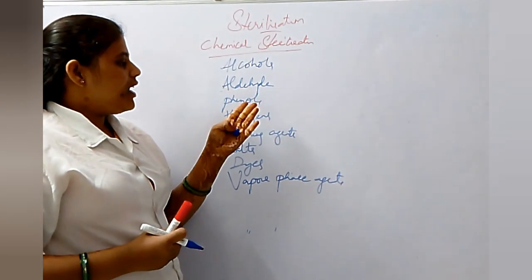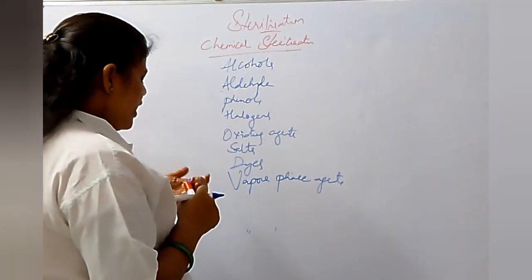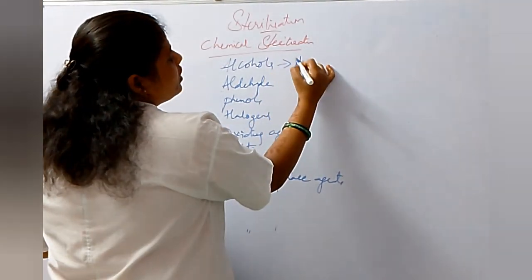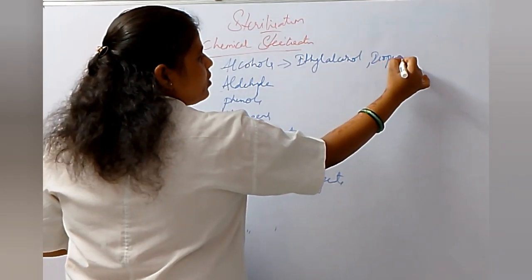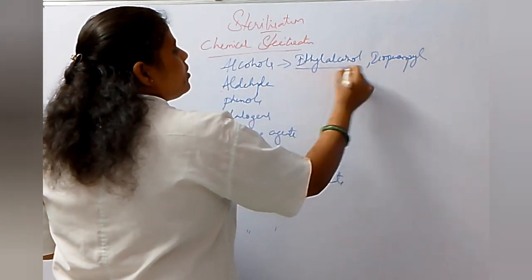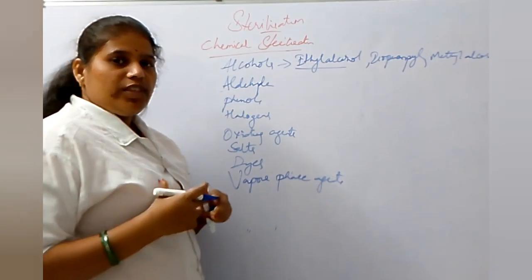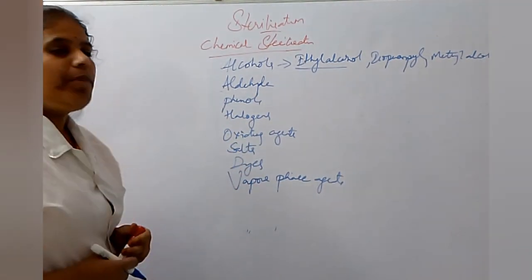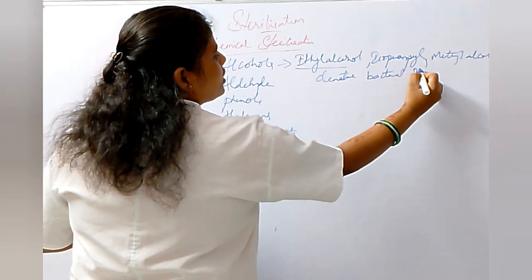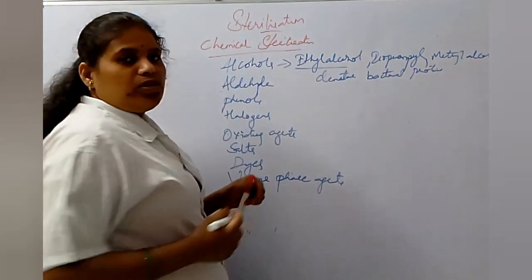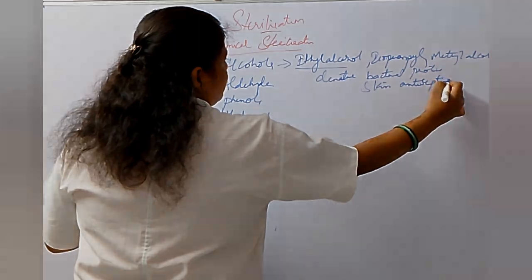The chemicals used include alcohol, aldehyde, phenol, halogen, oxidizing agent, salts, dyes, and vapor phase agents. In alcohol we have ethyl alcohol, isopropyl alcohol, and methyl alcohol. These act by denaturing the bacterial proteins, and are used as skin antiseptics.